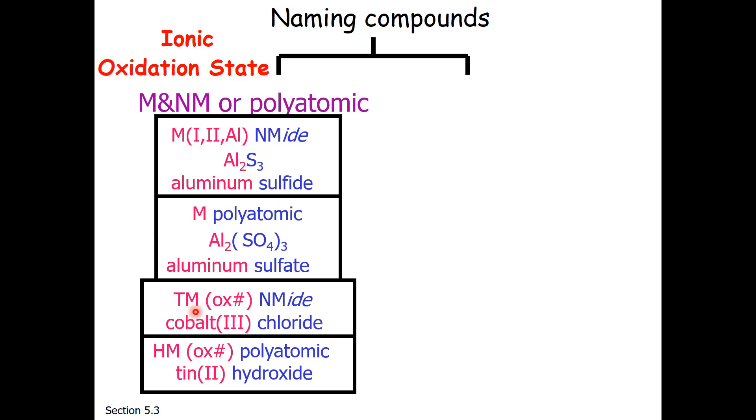If we have a transition metal, oxidation number is important. So for example, cobalt with chlorine, we have to specify the oxidation state to know how many chlorines make a neutral compound. And if we have one of those heavy main group metals, again, oxidation number must be stated. And in this case, I have it with a polyatomic.